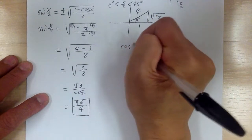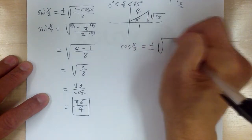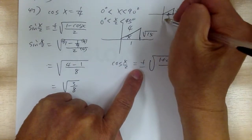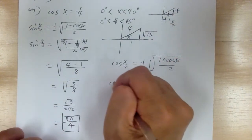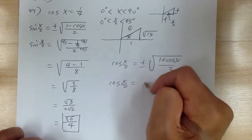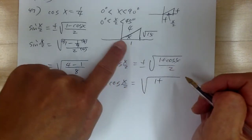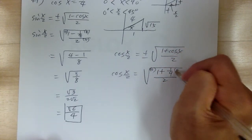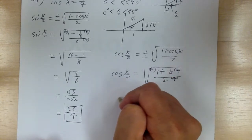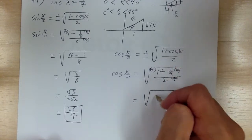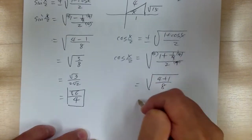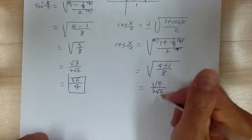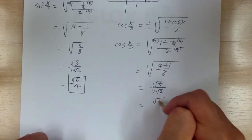For cosine of x over 2, it equals plus or minus square root of 1 plus cosine x over 2. In quadrant 1, cosine is positive. So it's 1 plus 1 over 4 over 2. Multiply by common denominator 4, giving 4 plus 1 over 8, which is 5 over 8. So this equals square root of 5 over square root of 8, which is 2 root 2. Multiply by root 2 over root 2 to get square root of 10 over 4.